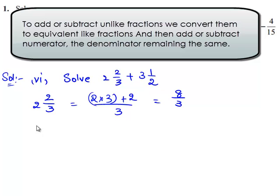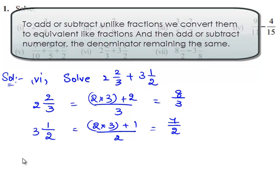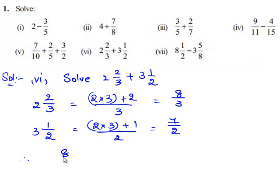And now the improper form for 3 1/2 is equal to 2 times 3 plus 1 divided by 2, which is equal to 7/2. Therefore now we need to add 8/3 and 7/2.